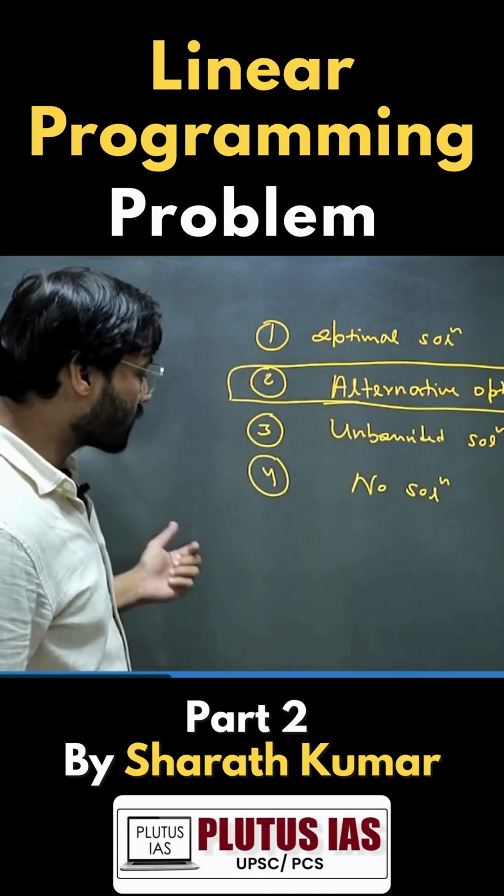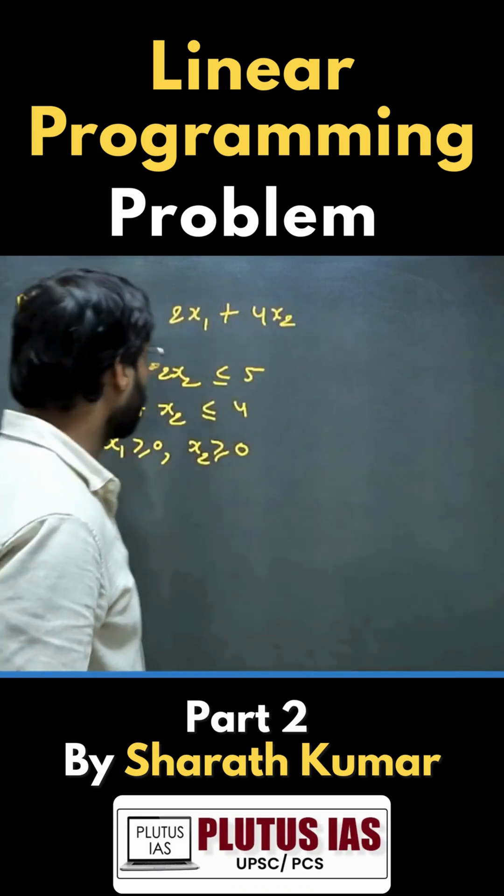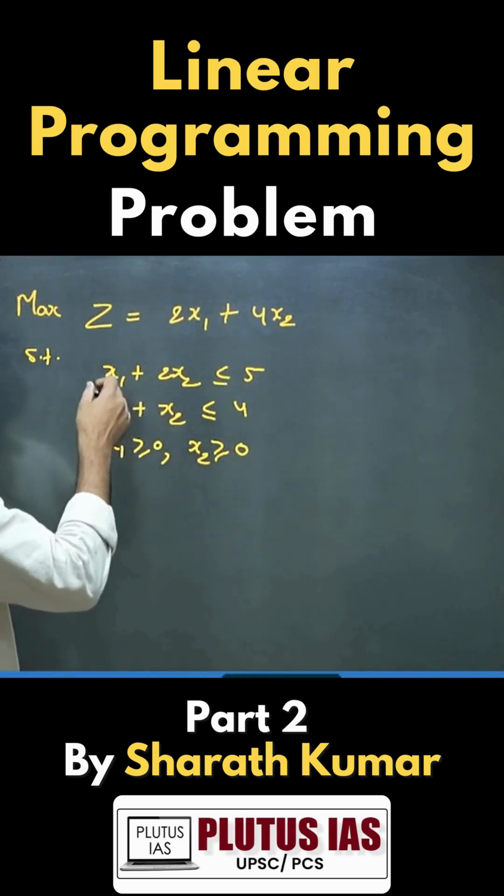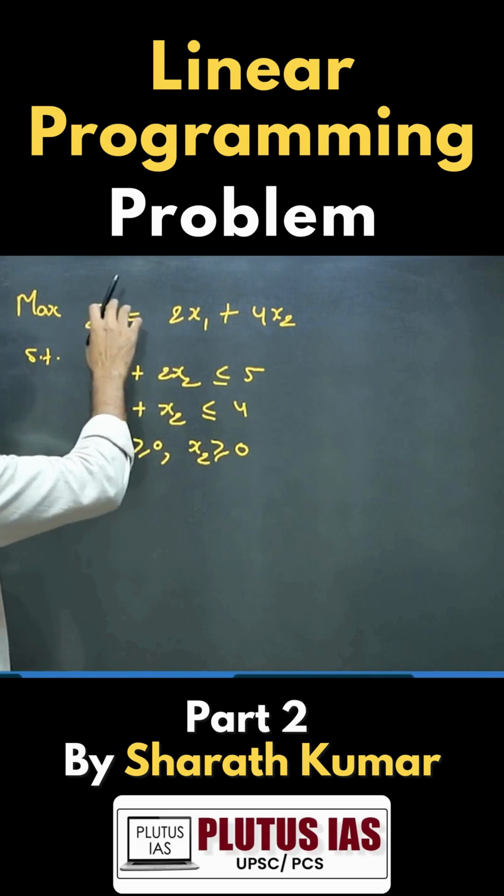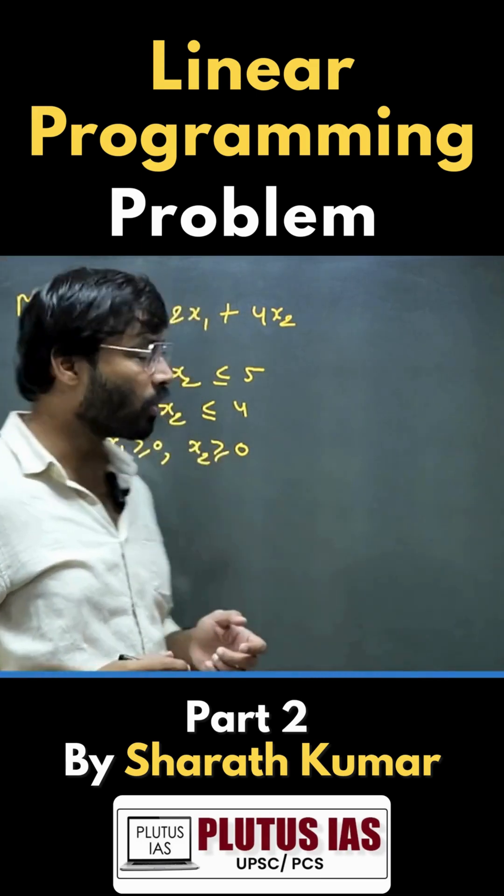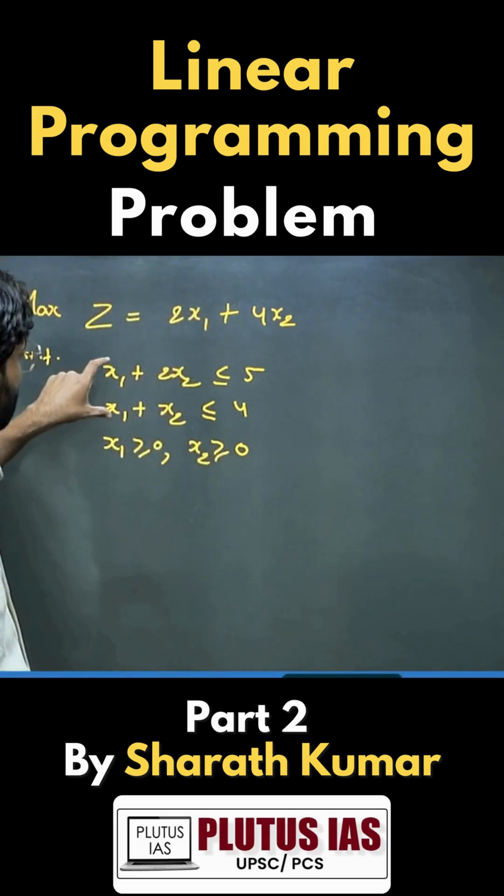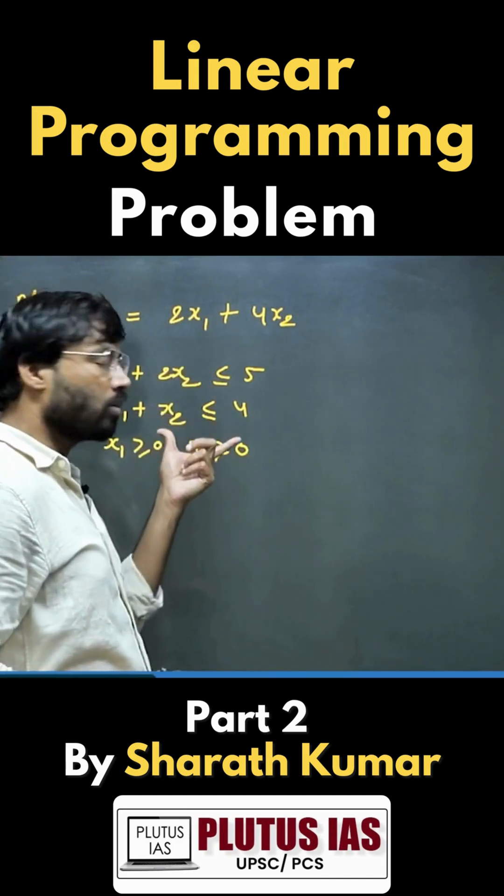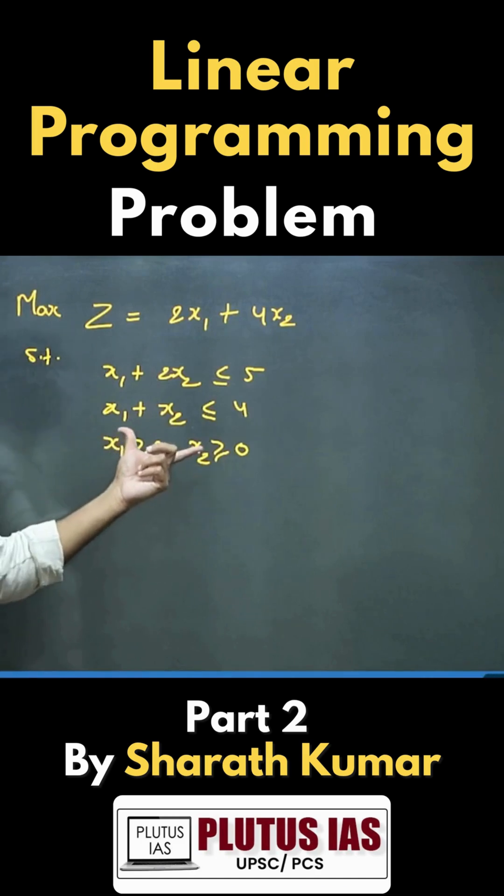We will see through an example. We have to solve this maximization problem where the objective function is max z = 2x1 + 4x2, subject to constraints x1 + 2x2 ≤ 5, x1 + x2 ≤ 4, and variables greater than or equal to 0.